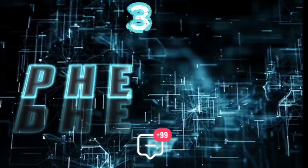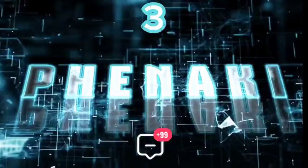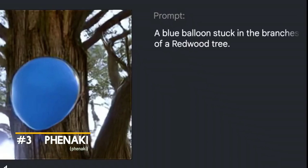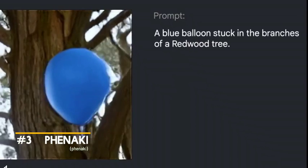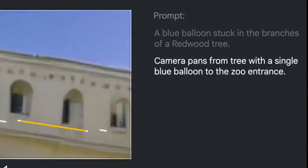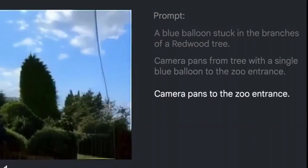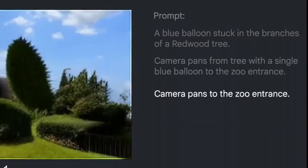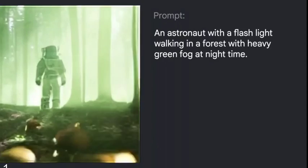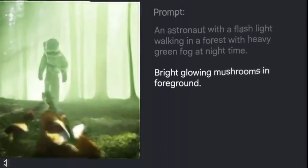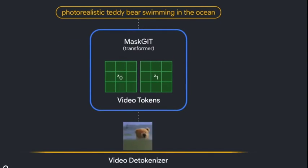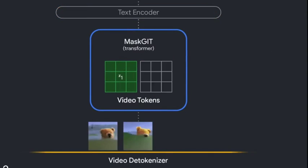Our third tool is Fanaki, an AI model that generates videos that can be multiple minutes long straight from text prompts. You can also generate a video from a still image and a prompt. The proposed video encoder-decoder outperforms all per-frame baselines currently used in the literature in terms of spatiotemporal quality and the number of tokens per video. The generated video tokens are subsequently de-tokenized to create the actual video.